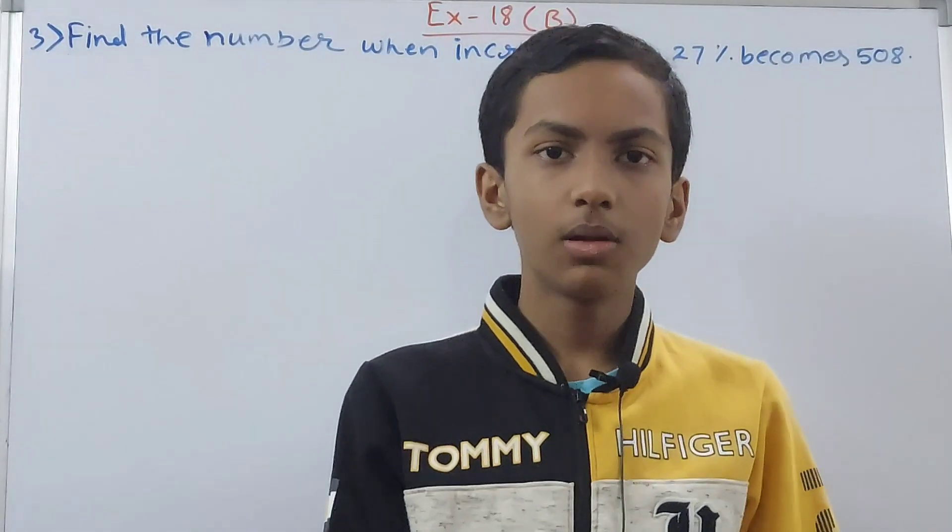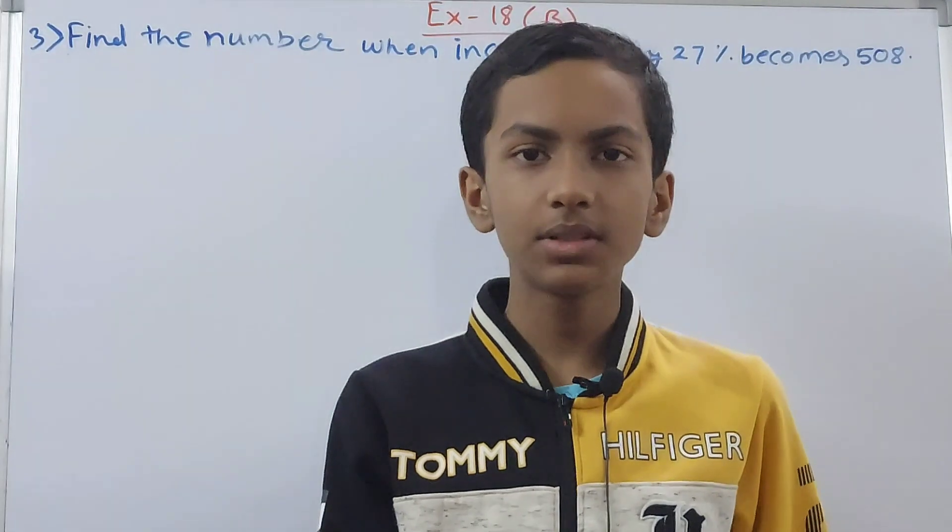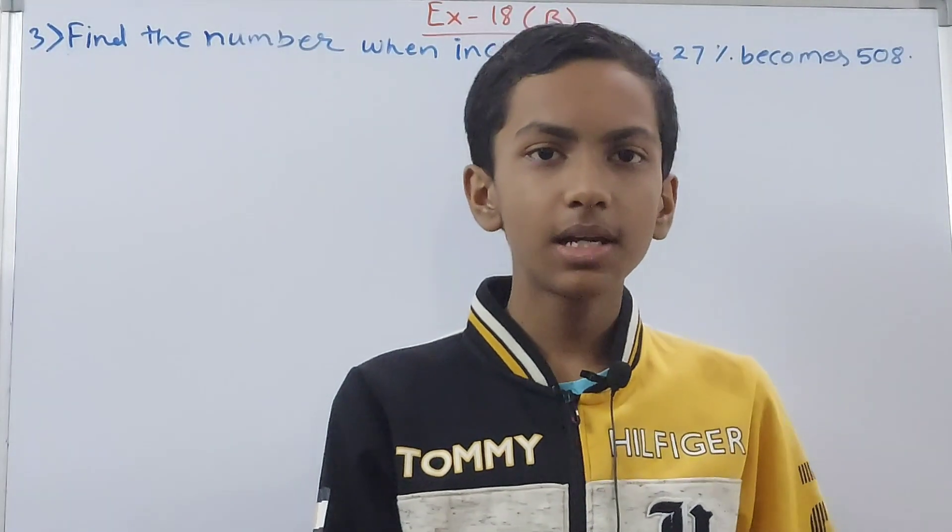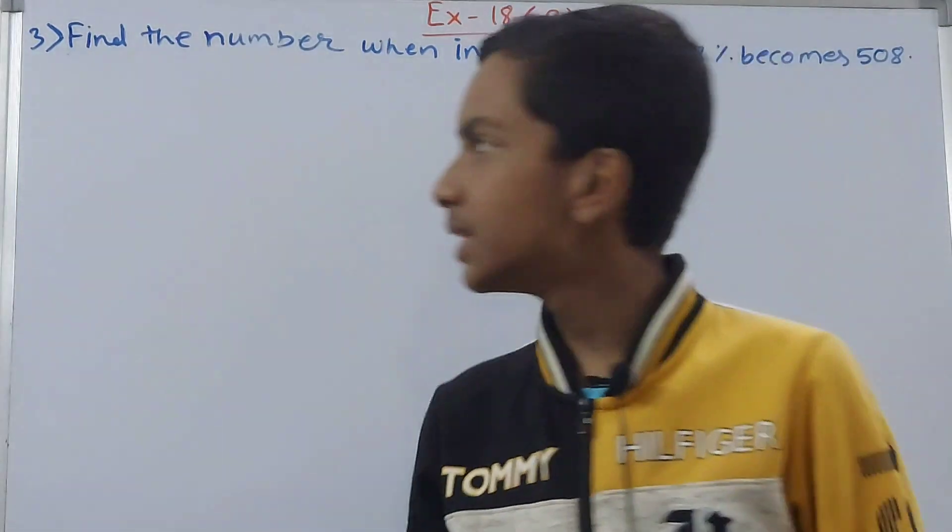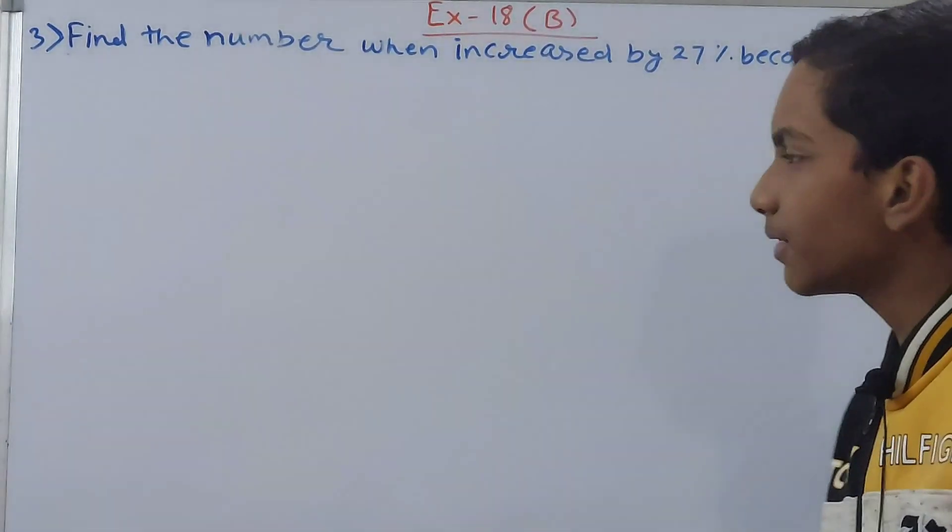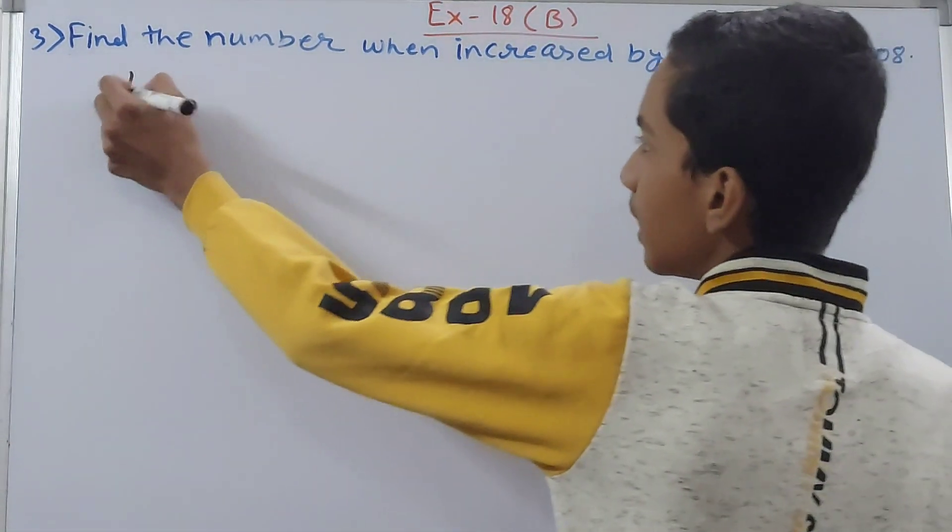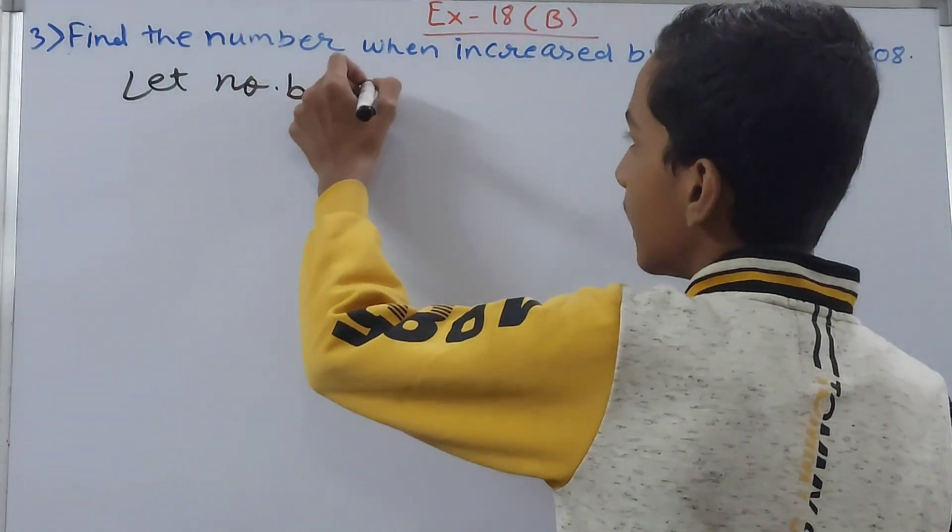Welcome back to my YouTube channel, Okay Learning. In this video, we are going to solve ICSE Mathematics Class 7, Chapter 18: Percentage and Its Applications, Exercise 18B, Question 3. This one is find the number when increased by 27% becomes 508. So again, same thing, let the number be x.